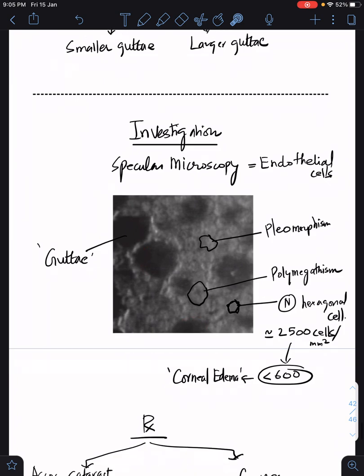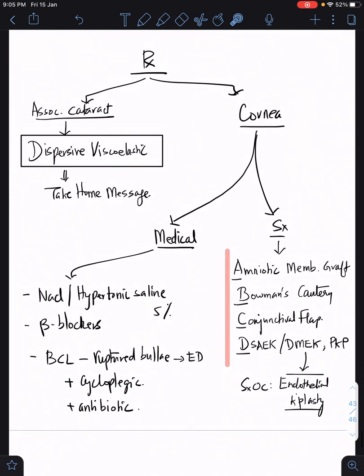As far as treatment is concerned, treat the associated cataract. If there's cataract, always give a dispersive viscoelastic. That is the take-home message: please protect the corneal endothelium by giving dispersive viscoelastic which is going to coat the endothelium and protect against surgical trauma.